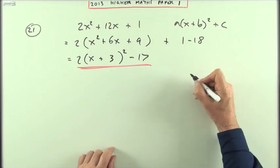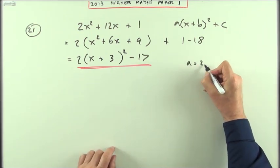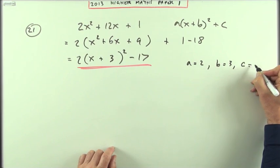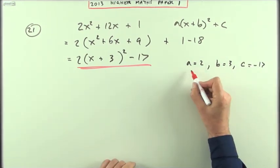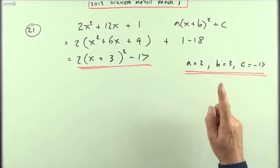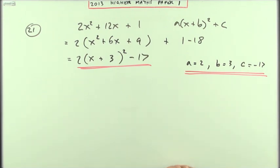I might put a wee note saying a is 2, b is 3, c is negative 17. But that might just be me being a wee bitty too cautious or apprehensive of them in their marking.